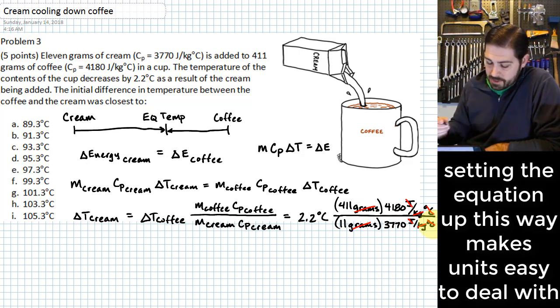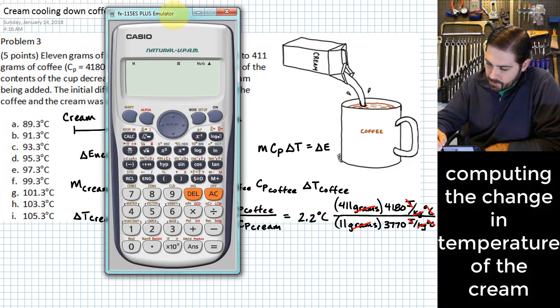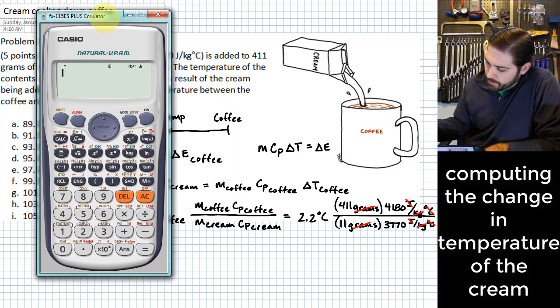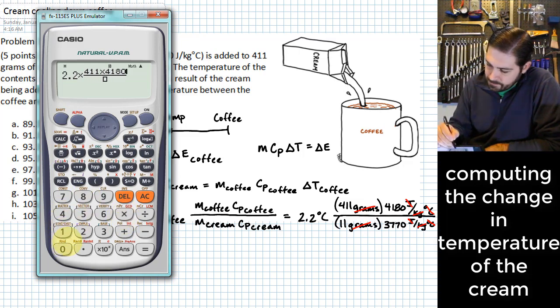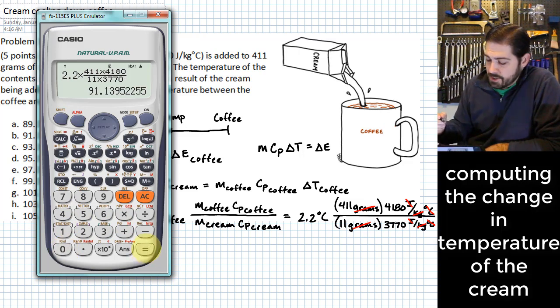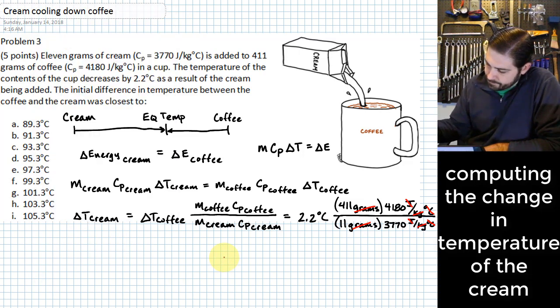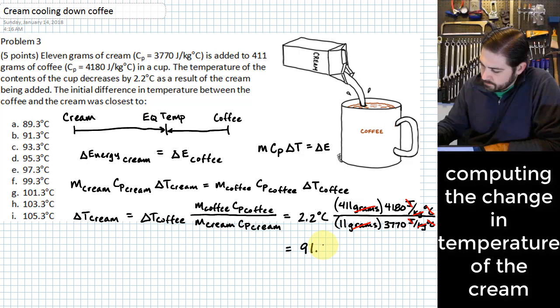So what we have there is 2.2 times 411 times 4180 divided by 11 times 3770, and this gives us that the change in temperature of the cream is 91.14 degrees C.